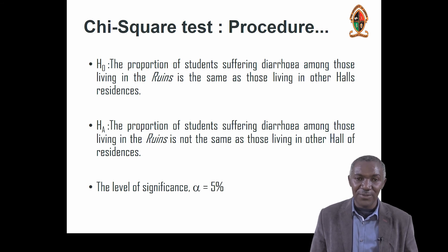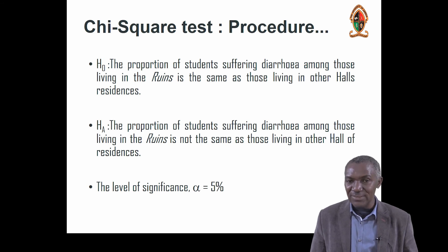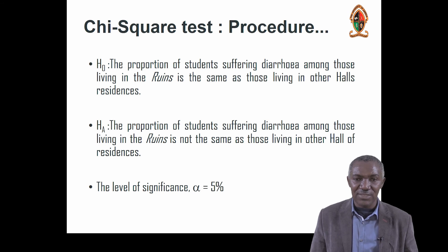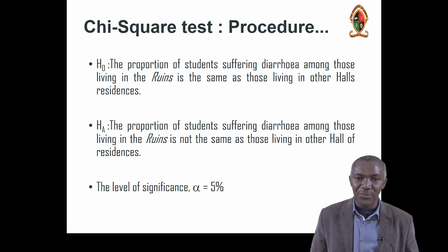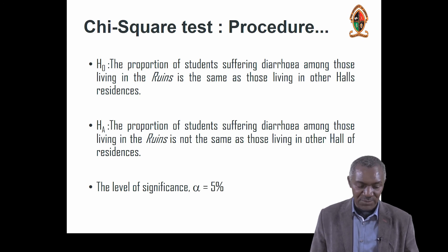The alternative hypothesis is that the proportion of students suffering diarrhea among those living in the Ruins is not the same as those living in other halls of residence. We test the null hypothesis at a 95% confidence level, which gives us an alpha value of 0.05.